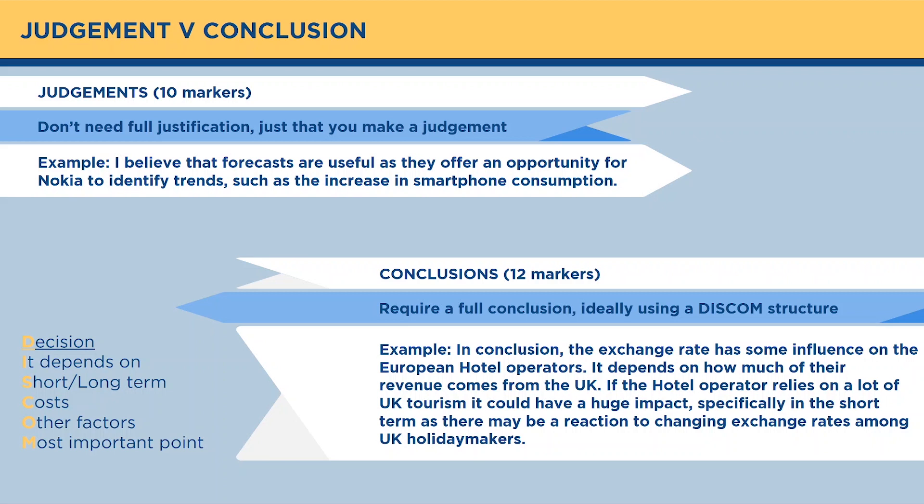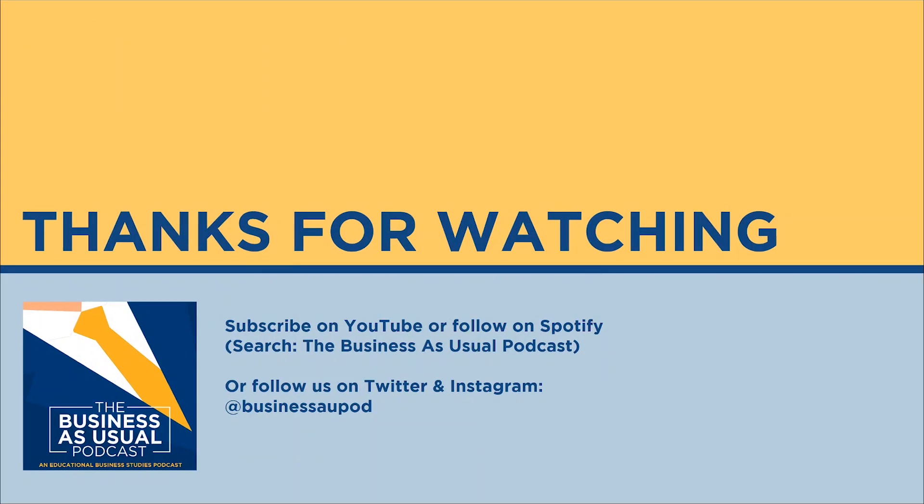This is something you want to go back to and practice. Make sure you can get your hands on some 10 markers and some 12 markers to practice the two different types of structure and make sure you know the difference. You should be able to get through the 10 marker in around 10 minutes, which gives you 12 minutes to add that extra paragraph and make sure your conclusions are a little bit meatier. If you've got any questions, you can get in touch. Make sure you subscribe on YouTube or follow on Spotify for the Business As Usual podcast, or follow us on Twitter and Instagram at businessaupod.